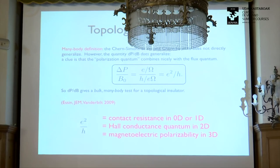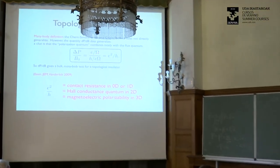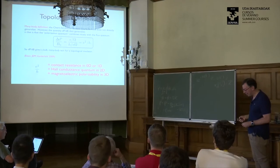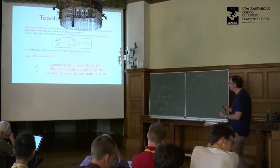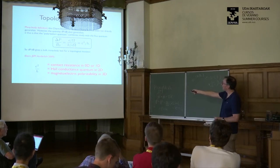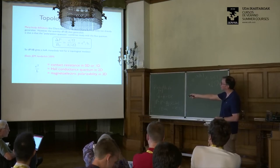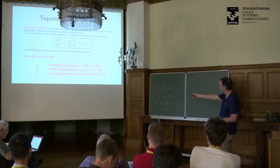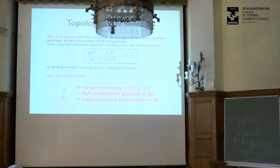How do we get rid of the lattice dependence? One way is to ask what the magnetic flux quantum in a crystal is — what magnetic field through a unit cell still gives a unit cell. That's one flux quantum per unit cell, and the ratio is exactly e²/h. Nothing in this argument is non-interacting, so you can use this to give a many-body version of the magnetoelectric polarizability argument. This is why e²/h means something in every dimension: contact resistance in 0D, Hall conductance in 2D, and magnetoelectric quantum in 3D.